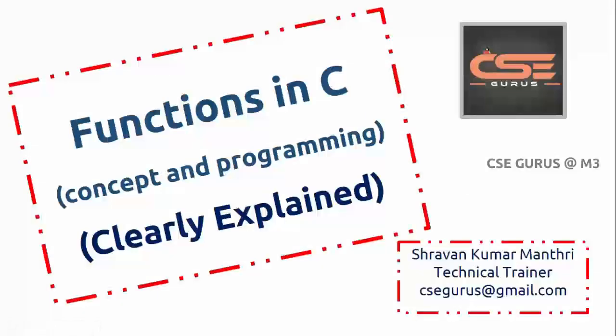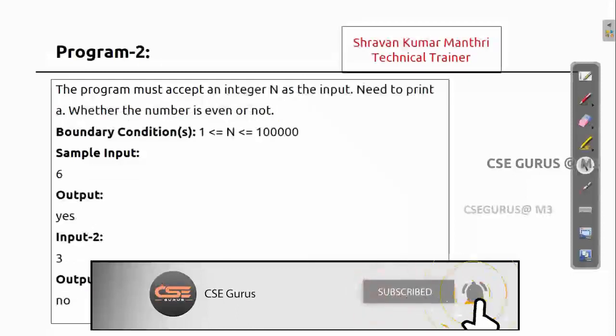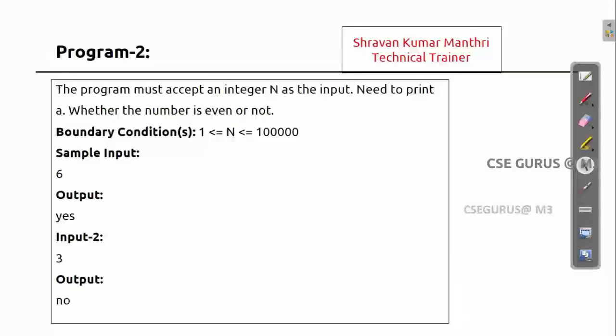Hello everyone, this is Sravan Kumar Mantri, technical trainer, welcome to our channel CSE Gurus. Now we will look at whether a given number is an even number or not. In general, an even number is divisible by two — when you divide, the remainder must be zero. If not, it is an odd number. We want to print either 'yes' or 'no'.